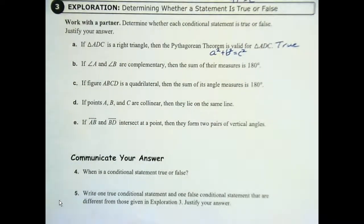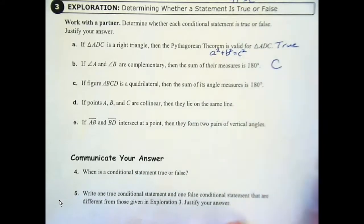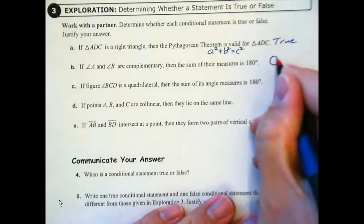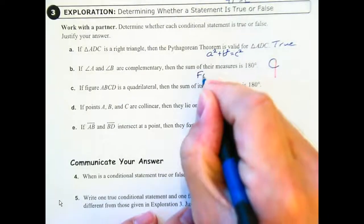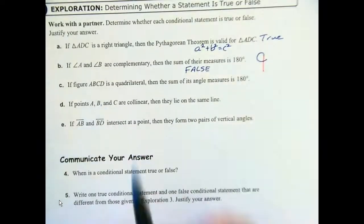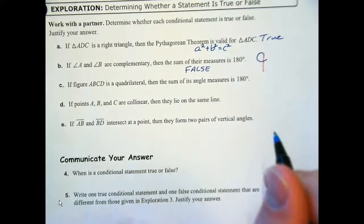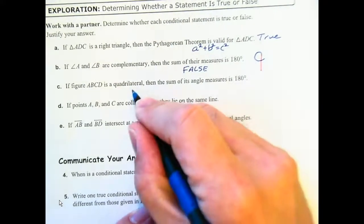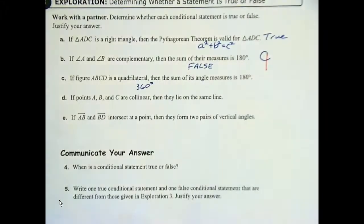Letter B: if angles A and B are complementary, then their sum adds up to 90 degrees. Remember the word 'complementary' makes a 'c' like a nine, so complementary adds to 90 — this statement is false because the problem likely states 180. Letter C: if figure ABCD is a quadrilateral, then the sum of its angle measures is 180. False — that's for a triangle. A quadrilateral has 360 degrees.